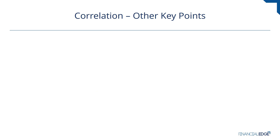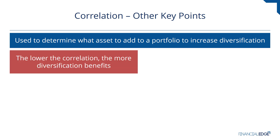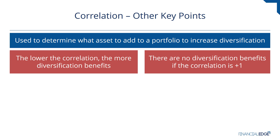Some other key points around correlation. Probably the most important use of the correlation statistic in finance is that it helps us determine what asset to add to a portfolio to increase diversification. The lower the correlation, the more diversification benefits — because the lower the correlation, the higher the likelihood that assets move in different directions. The complete opposite is also true: if we have two assets with a perfect correlation of positive one, there are no diversification benefits by adding them together. They'll move together in the same direction by the same proportion and therefore do not change the variability of returns in a portfolio.